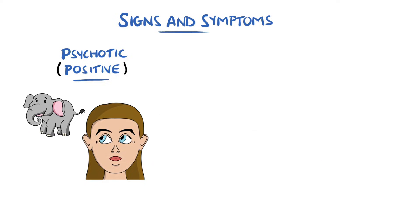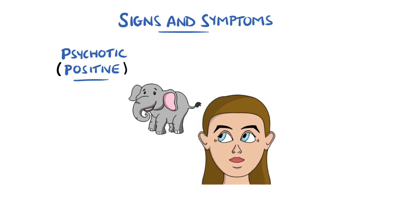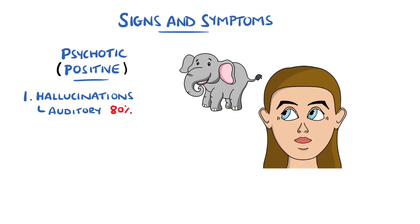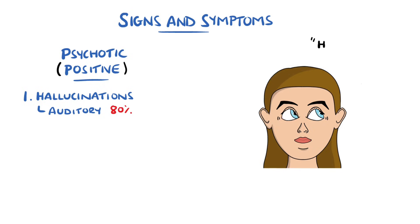Psychotic symptoms include hallucinations, meaning sensing something that is not there. Auditory hallucinations are particularly common, thought to occur in 80% of patients at some point.